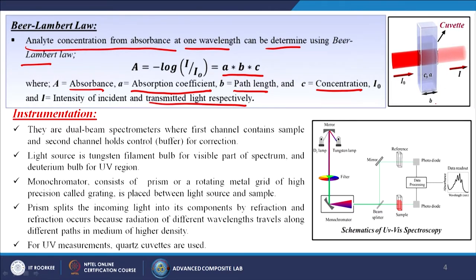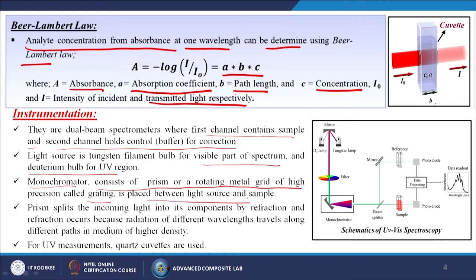So how are we going to measure this? Generally they are dual beam spectrometers where the first channel contains the sample and the second channel holds the control for corrections, generally for the buffer. The light source is a tungsten filament bulb for the visible part of the spectrum and a deuterium bulb for the UV region. A monochromator consisting of a prism or a rotating metal grid of high precision called a grating is placed between the light source and the sample. We have the D2 lamp and the tungsten lamp, a mirror, a filter, a monochromator, then a beam splitter, then a mirror, falling through the reference and then a photodiode and data processing. From here another beam goes directly to the sample, through another photodiode, then data processing, and we get the results.